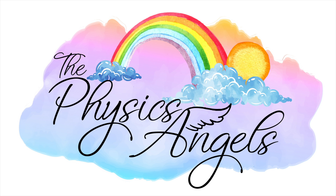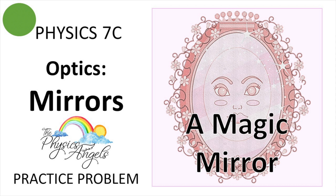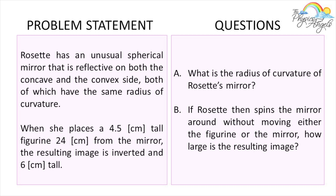Hello everybody, welcome back to our channel. In this episode we're going to be solving a Physics 7C practice problem on the topic of mirrors. As usual, if you're finding this content helpful please make sure to leave a like. This is the problem we're going to be solving: Rosette has an unusual spherical mirror that is reflective on both the concave and the convex side, both of which have the same radius of curvature. When she places a 4.5 centimeter tall figurine 24 centimeters from the mirror, the resulting image is inverted and 6 centimeters tall. The first thing we have to answer is: what is the radius of curvature of Rosette's mirror?